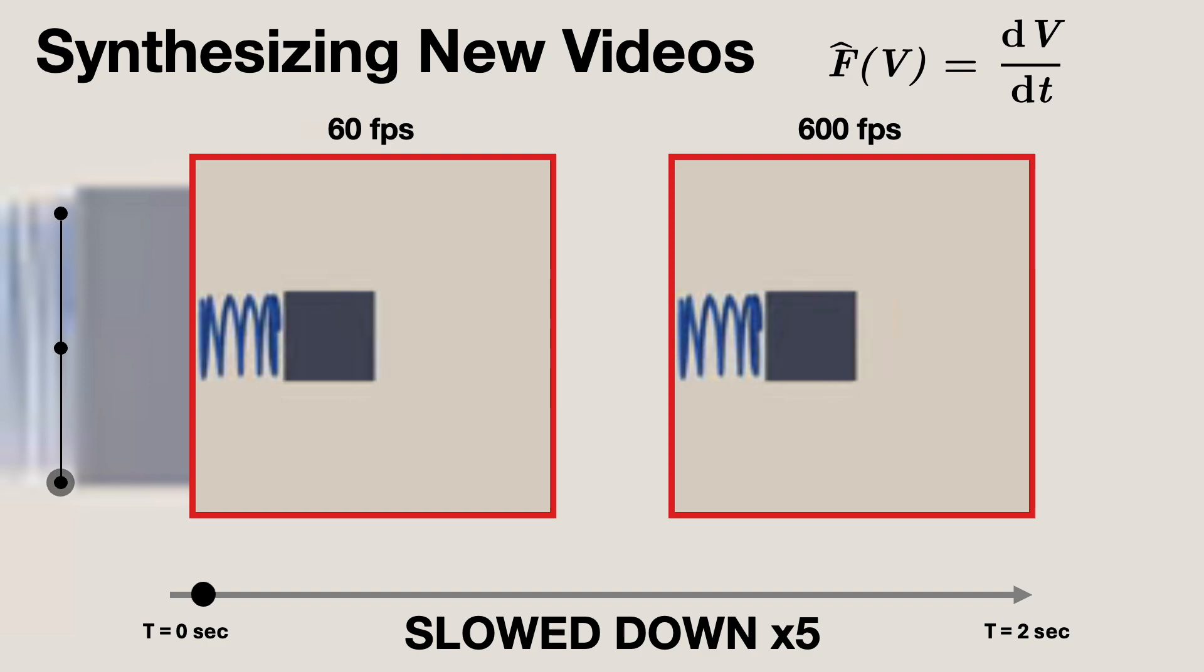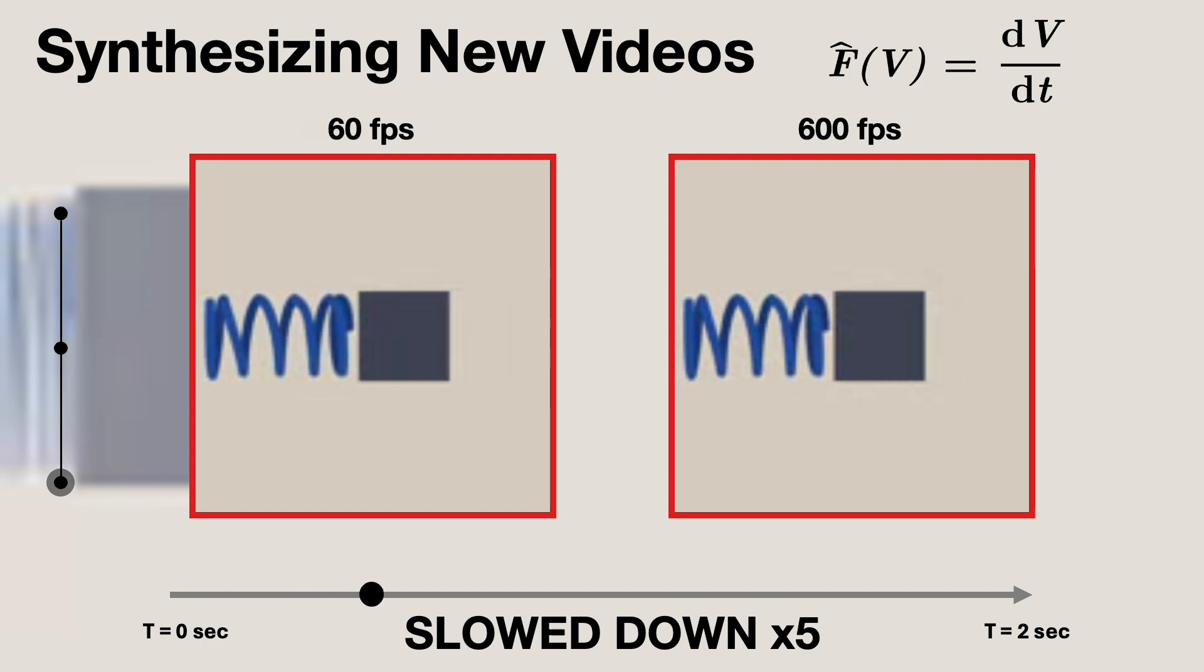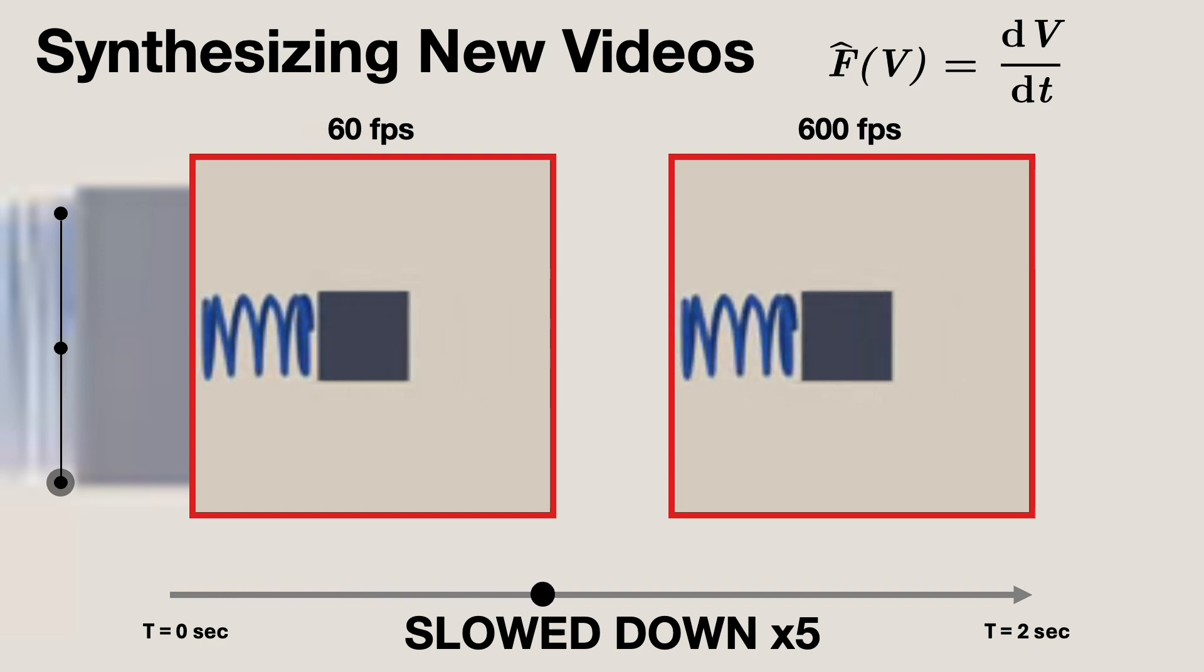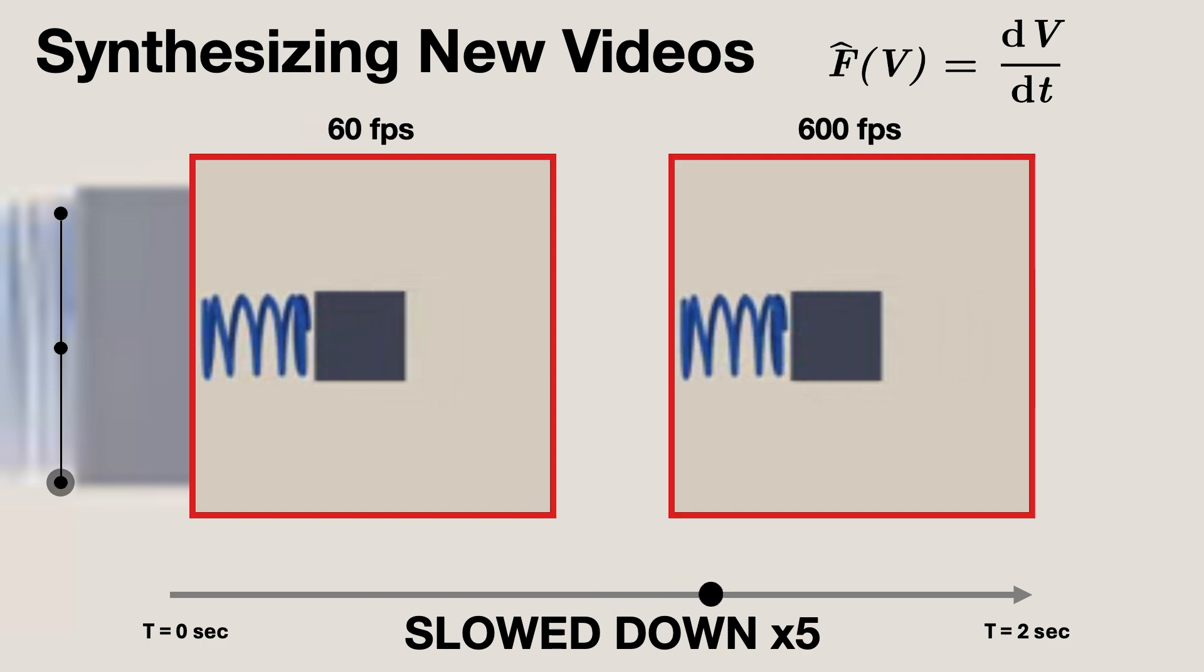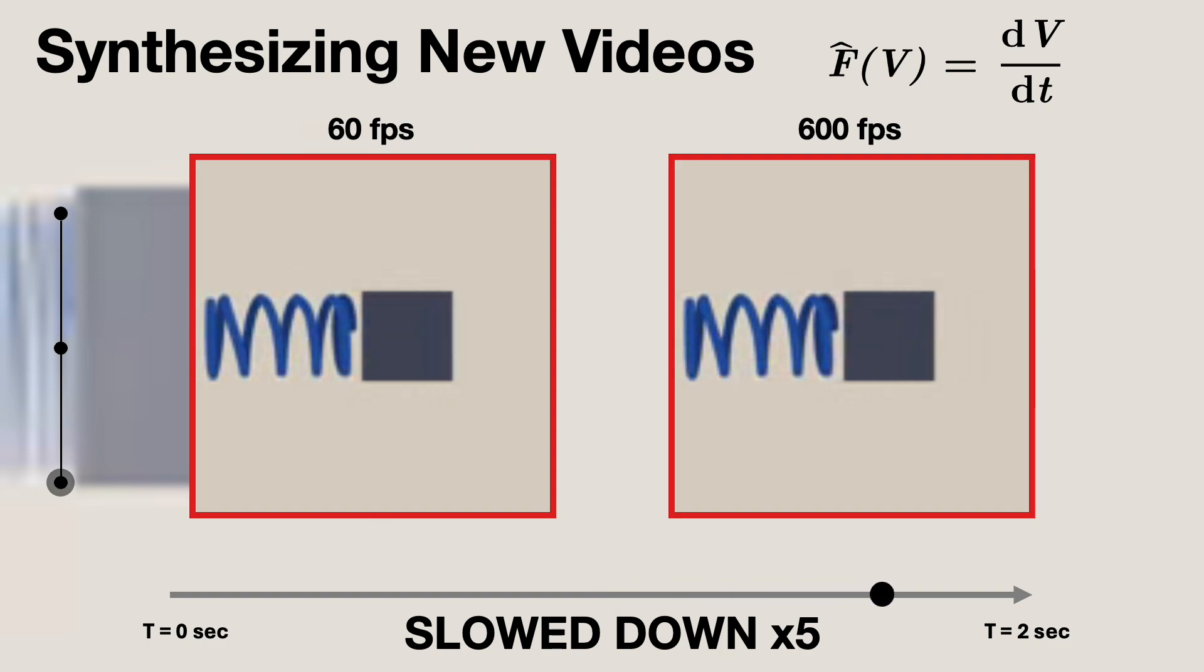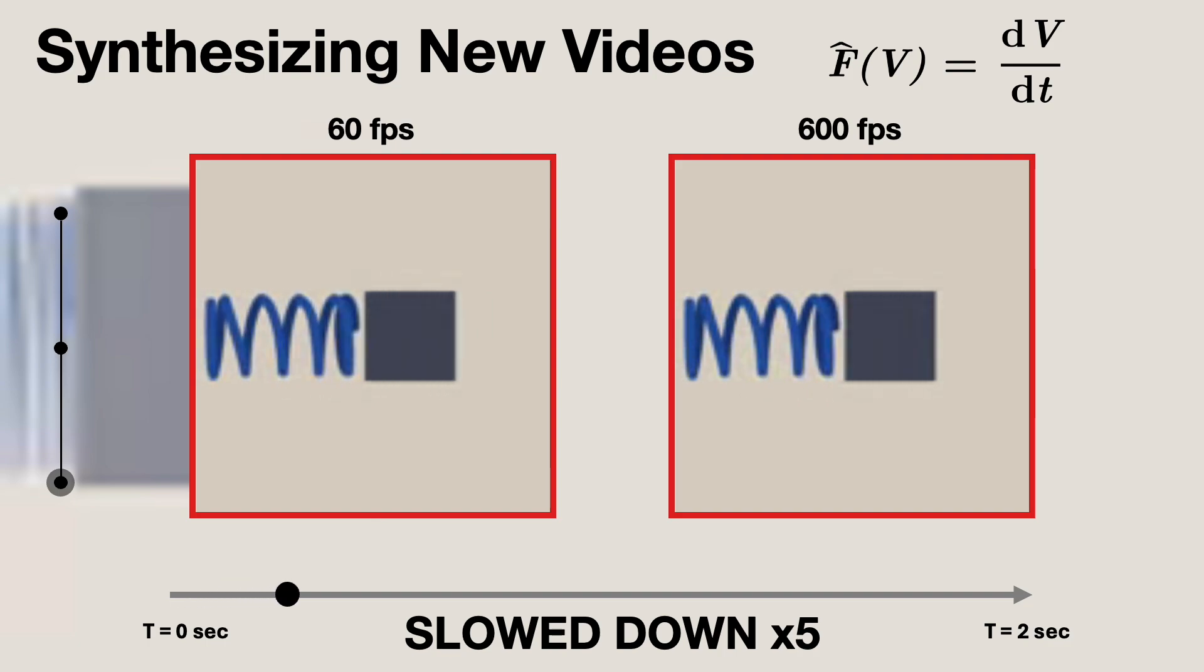A key advantage of our continuous representations is the ability to generate videos at varying frame rates. While our original dataset was captured with 60 frames per second, we can generate videos at 600 frames per second while ensuring the system follows the same dynamics.